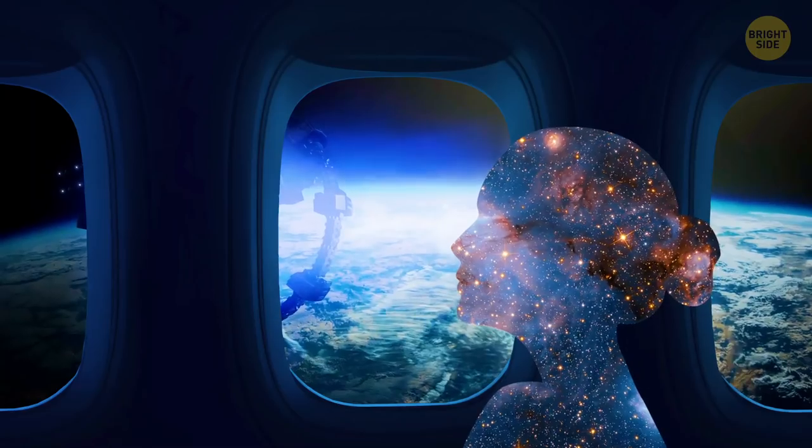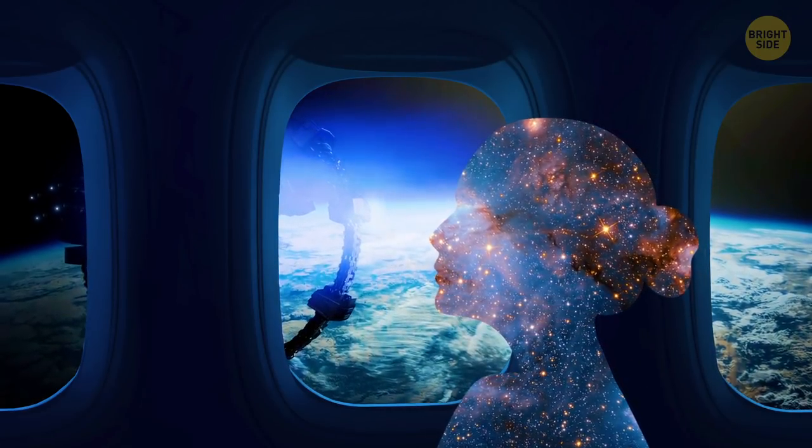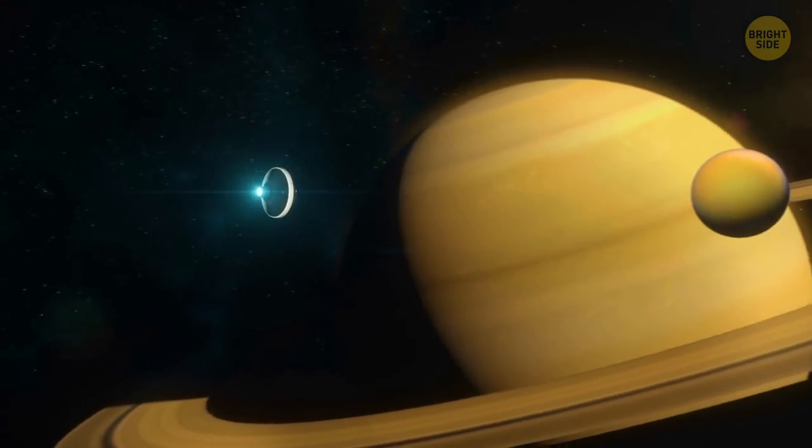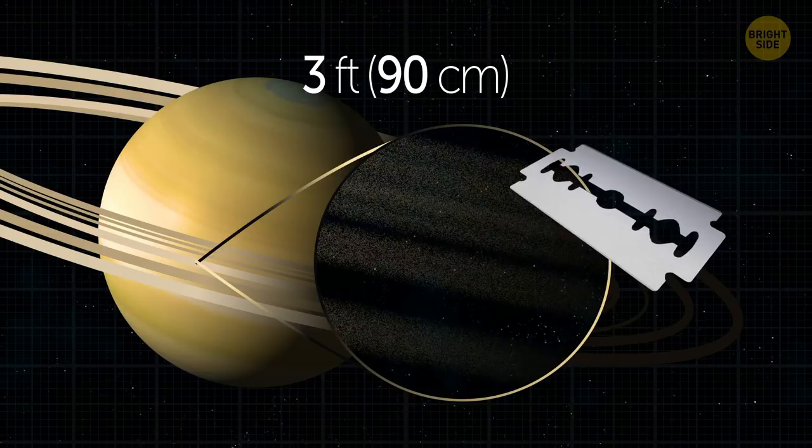Well, maybe not my tummy. But there are many other mind-boggling facts to learn, starting with Saturn's rings are very thin compared to its size. If you had a scale model of the planet that was 3 feet wide, the rings would be 10,000 times thinner than a razor blade.